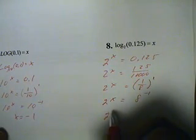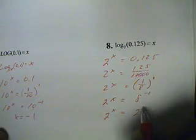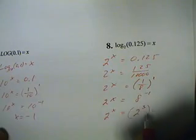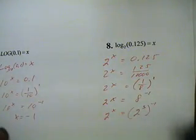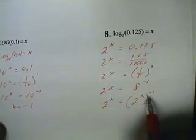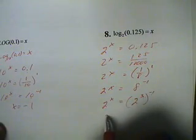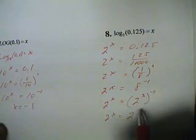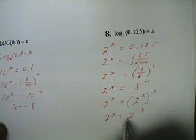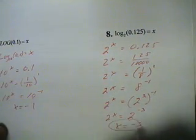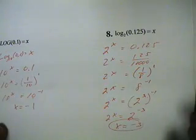Now I get a common base of two here, two to the x, and here two to the third power for the eight. All still raised to the negative one. We can multiply the exponents. So we get two to the negative three power. And since we have common bases, we can equate the exponents. So now x equals negative three.